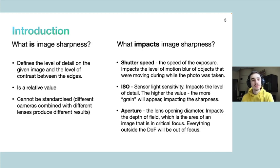So the research field is image sharpness, but what is image sharpness? We can say that it is a relative value that cannot be standardized because of multiple factors and it defines the level of detail of the given photo. Camera settings such as shutter speed, ISO, and aperture all influence the resulting image sharpness in one way or another.